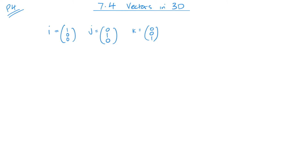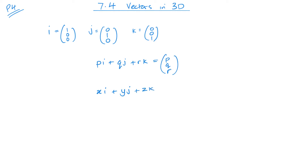If I think of my vectors in terms of I, J and K — I'm going to use the same notation as your textbooks to make it easier for you. So very much like our X, Y and Z. Another way of writing this would be XI plus YJ plus ZK.